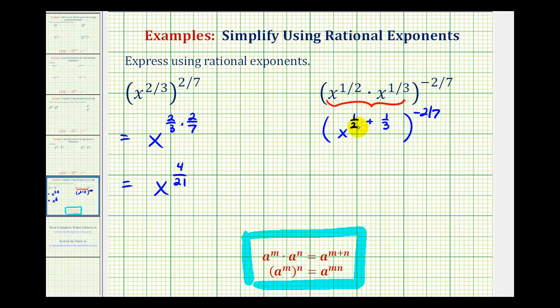So to add these fractions, we have to have a common denominator, and if we have a denominator of two and three, the LCD is going to be six, so we'll multiply this first fraction by three over three, and the second fraction by two over two.